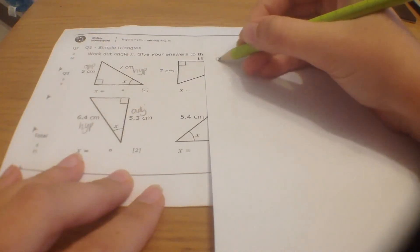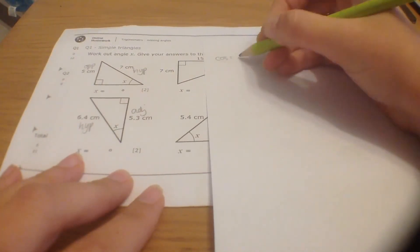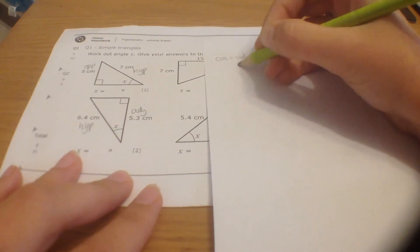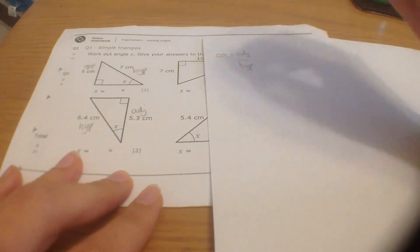So, SOH CAH TOA, we're using COS. And COS is adjacent over hypotenuse. We're using COS.